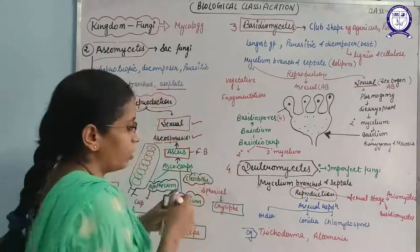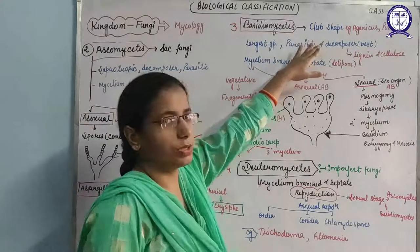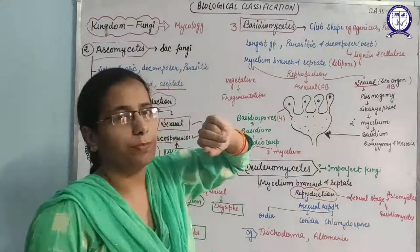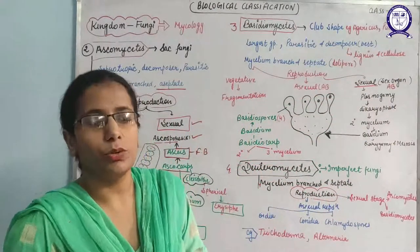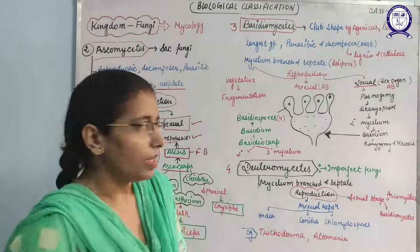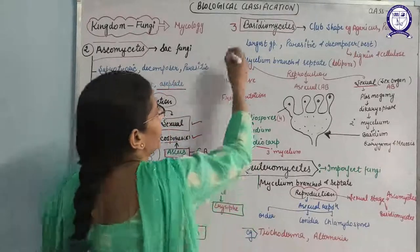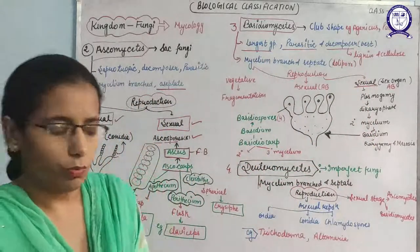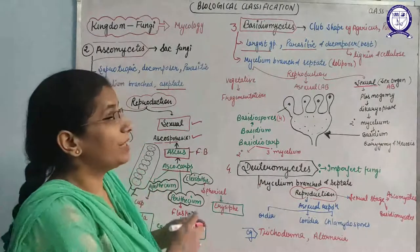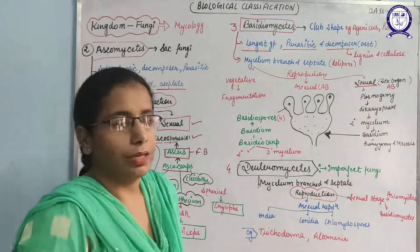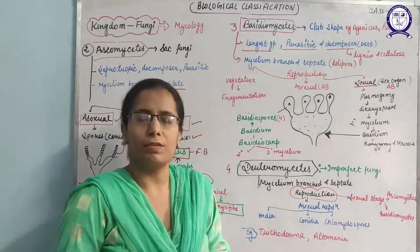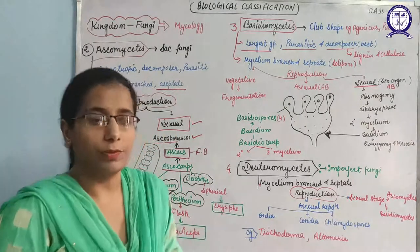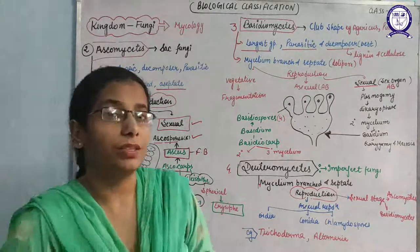Now, Basidiomycetes are known as club fungi. Examples are Agaricus and Puccinia. Puccinia causes disease in wheat — black rust of wheat. Basidiomycetes include all those fungi that are parasitic in nature and act as the best decomposers. They are called the best decomposers because they can degrade lignin — the most complex substance — using enzymes discovered from Basidiomycetes, since lignin could not previously be degraded by any other enzymes.